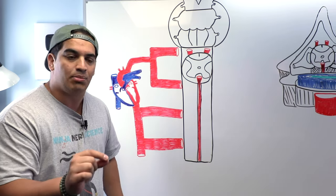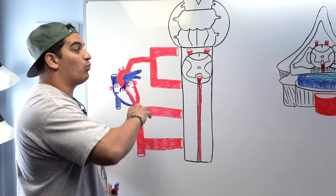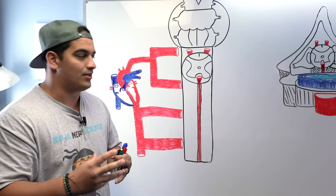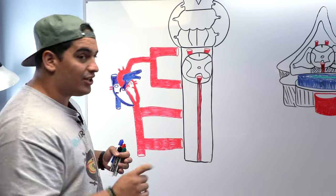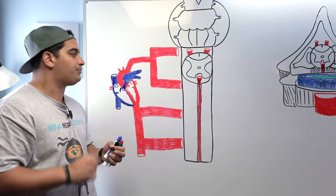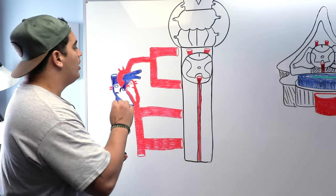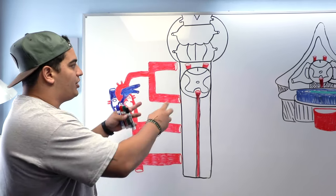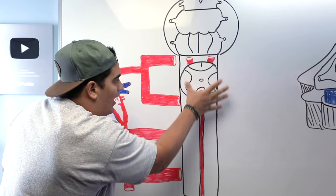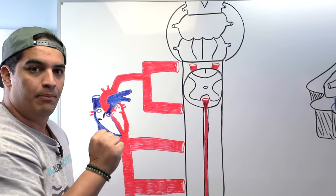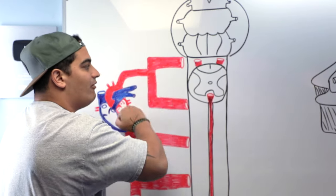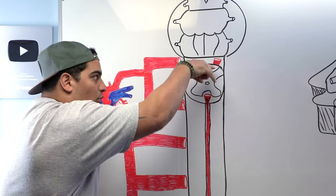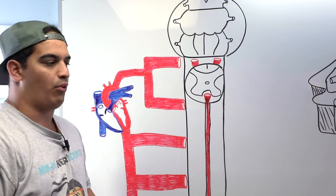If we understand the blood supply, we'll be able to really understand a lot of the pathophysiology behind certain diseases. We'll talk about that condition for this patient at the end. The first thing I want you to know is not just looking at all the little vessels around the spinal cord, but first knowing the main vessels that are going to be feeding into these small vessels around the spinal cord.